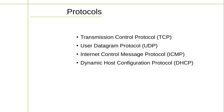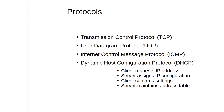DHCP, Dynamic Host Configuration Protocol, is a protocol used to dynamically assign IP addresses to devices on a network. In a home or small business network, DHCP is usually performed by a router or a dedicated DHCP server, which is responsible for dynamically assigning IP addresses to devices on a network. Here's how the process of DHCP typically works. When a device connects to the network, it broadcasts a request for an IP address. The DHCP server receives the request and assigns a unique IP address to the device, along with other network information such as the subnet mask, default gateway, and DNS server addresses. The device receives the assigned IP address and other network information from the DHCP server and uses it to configure its network settings. Finally, the DHCP server maintains a table of assigned IP addresses and the devices that have been assigned them, so it can ensure that each device on the network has a unique IP address.